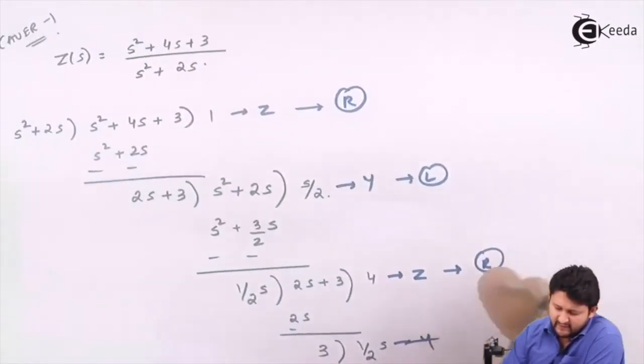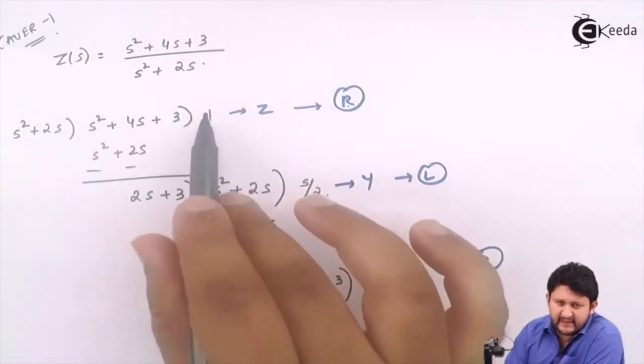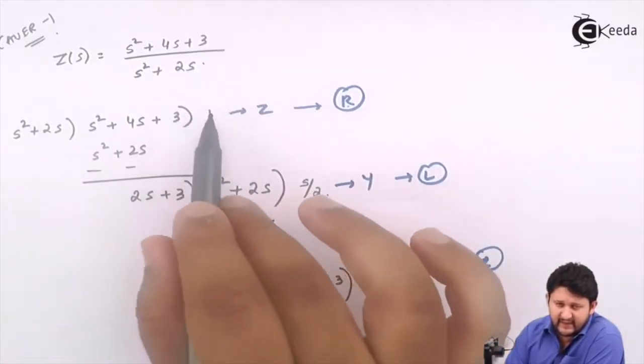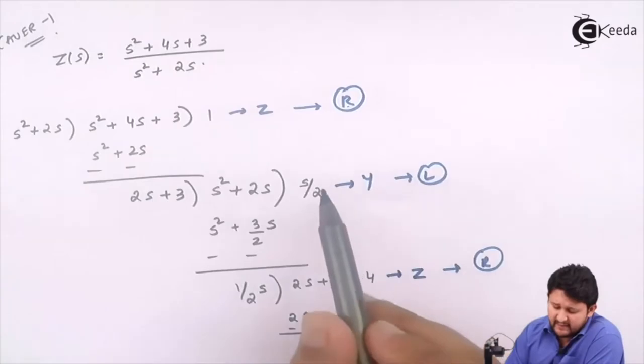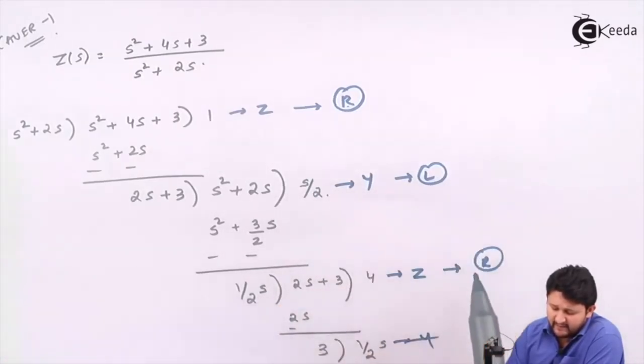So how to find the value for R? You will never be getting any S term, so you have the value for R directly as 1 ohm. For L, the same concept - adjacent to S. 1 upon 2 will be L.